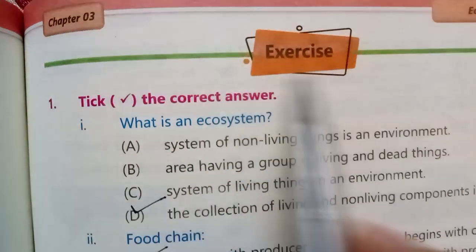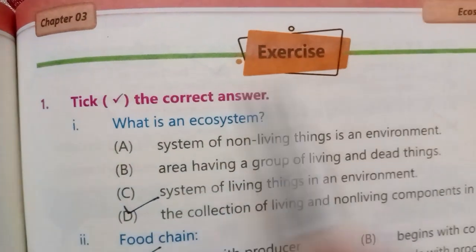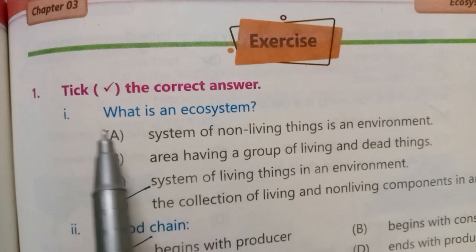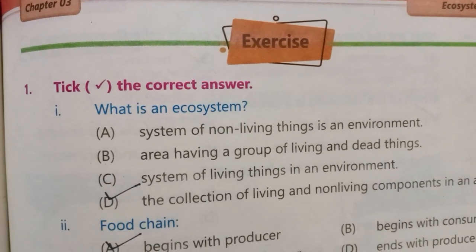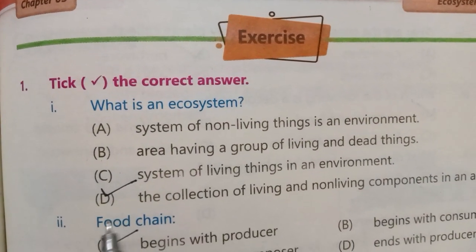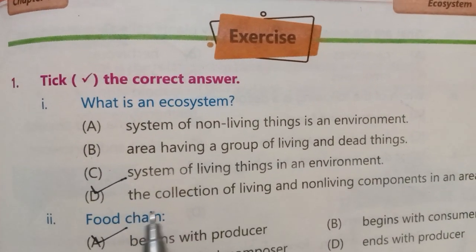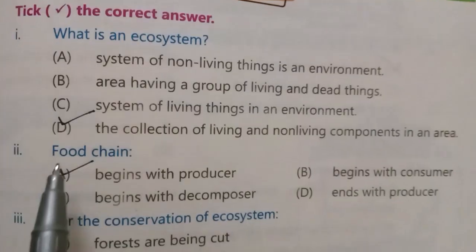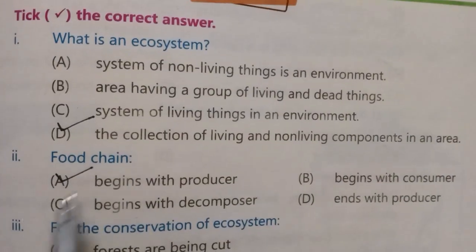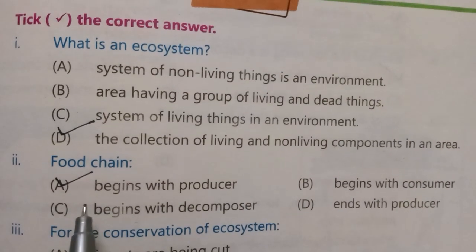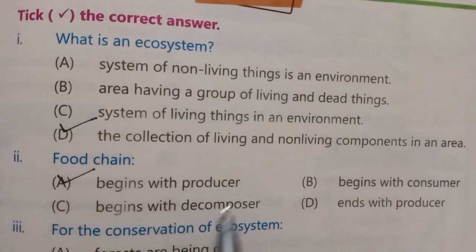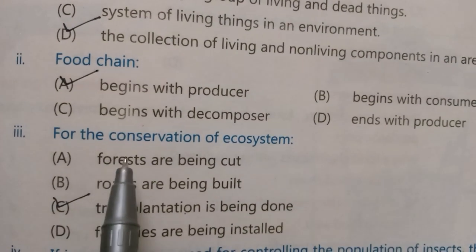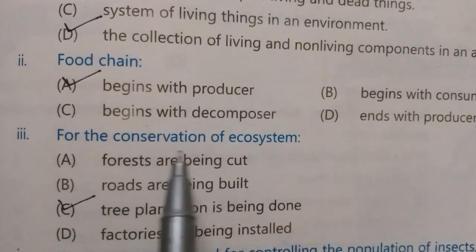Bismillahirrahmanirrahim. Chapter number three exercise. What is an ecosystem? The correct answer is: the collection of living and non-living components in an area. What is a food chain? The correct answer is: it begins with a producer.